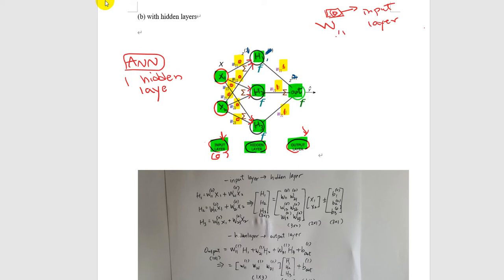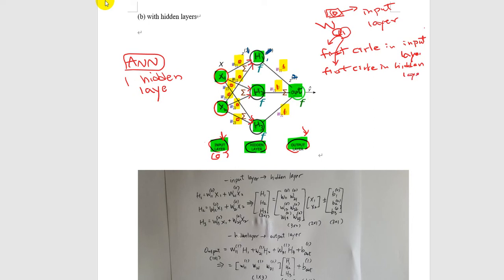Here you're going to see A11. The first '1' means the first circle — the first neural value placed on the previous layer, which in this case is the first circle in the input layer. And the second '1' means the first circle in the next layer, which is the first circle in the hidden layer.